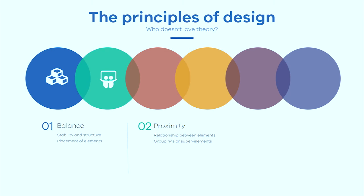The third principle is alignment. Anything not in line with other elements will always stick out. You can use that to your advantage, but most of the time it makes sense to align all elements so your viewer can clearly follow the visual hierarchy. If you have things slightly above or below, with nothing properly aligned, it's very difficult for viewers to know which way to follow the report.